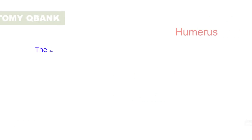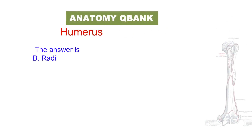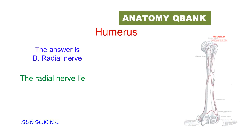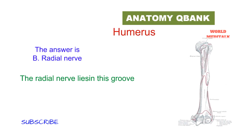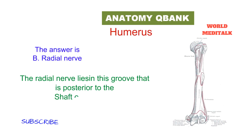The answer would be radial nerve. The radial nerve lies in the groove that is posterior to the shaft of humerus.